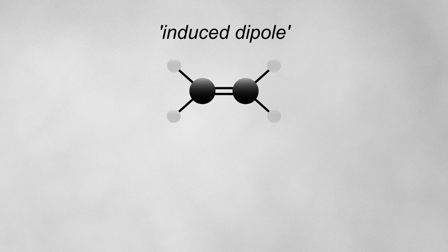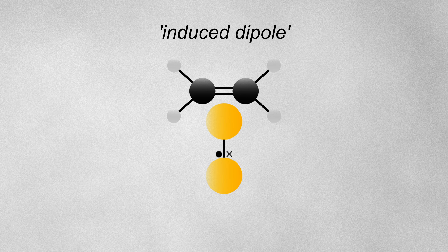It's also possible for an induced dipole to exist. This happens because electrons are not static. They move around the molecule randomly. So when two molecules approach each other, the electrons in one molecule can be repelled from the electrons in the other, resulting in a temporary dipole.